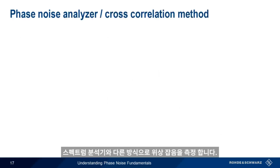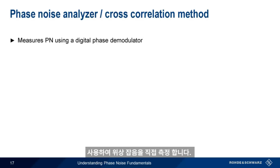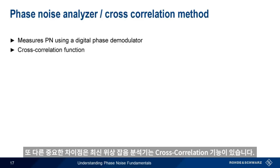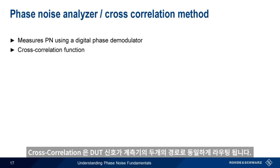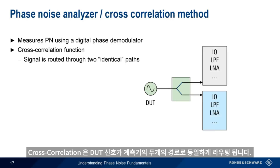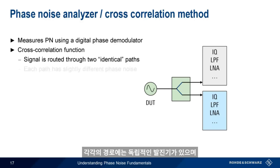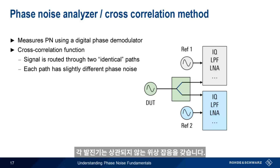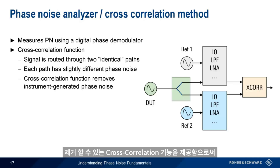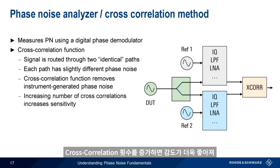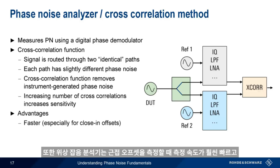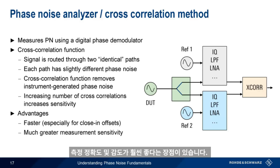Although it presents results in the same way, a phase noise analyzer measures phase noise differently than a spectrum analyzer. The first difference is that phase noise analyzers measure phase noise directly, typically using a special digital phase demodulator. The other important difference is related to the cross-correlation function in modern phase noise analyzers. In cross-correlation, the incoming signal from the device under test is routed through two identical measurement paths in the instrument. These identical paths have independent oscillators, each of which has slightly different or uncorrelated phase noise. These two paths feed a cross-correlation function that can then remove the uncorrelated phase noise generated by the instrument, allowing a more precise and more sensitive measurement of the phase noise in the signal from the DUT. Increasing the number of cross-correlations further increases the sensitivity, allowing the measurement of extremely low levels of phase noise. Phase noise analyzers therefore have the advantage of being much faster, especially when measuring close-in offsets, as well as having much greater measurement accuracy and sensitivity.